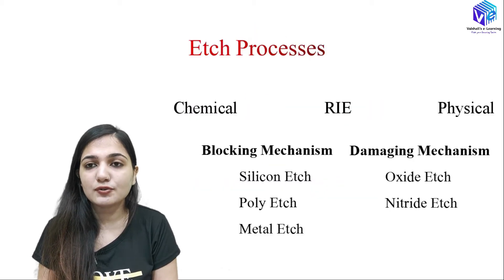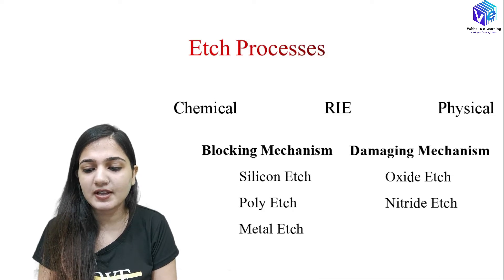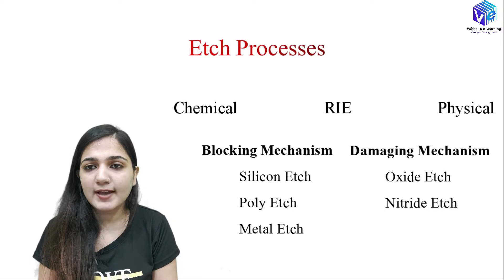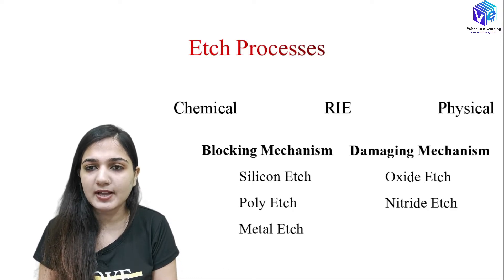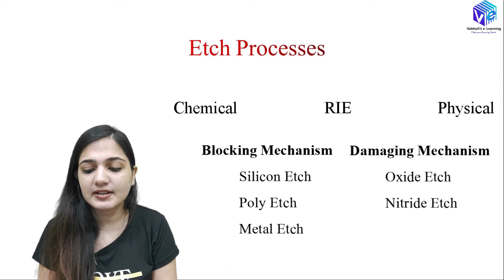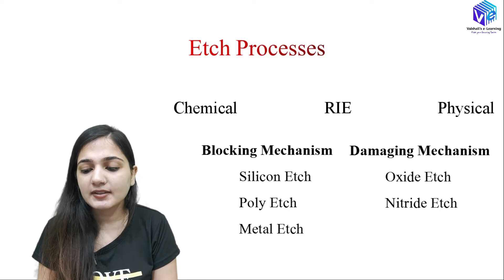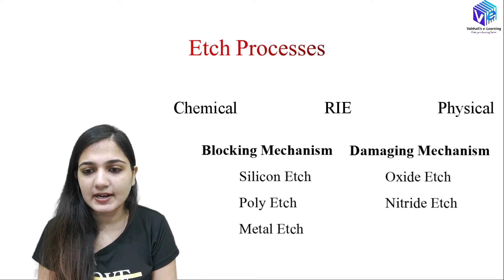First of all, we are going to describe the three types of etching: chemical etching, physical etching, and reactive ion etching. We have two types of mechanism: the blocking mechanism and the damaging mechanism. In the blocking mechanism we have silicon etching and polysilicon etching for isolation formation, and also metal etching. In the damaging mechanism we have oxide and nitride etch.